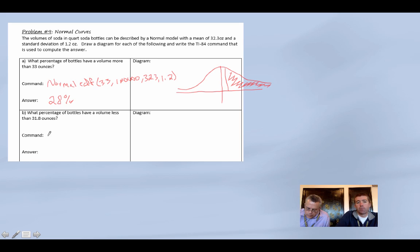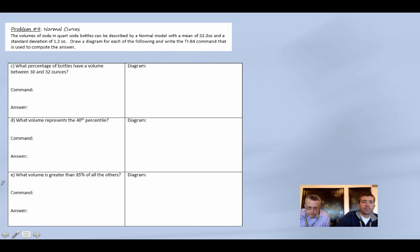Next. So let's do the same thing. Now we want less than 31.8 ounces. Same command, except for this time we're going from negative 100,000. How about just a diagram this time? Here's 32.3, we're at less than 31.8, all this fun stuff down here. And it's 32.3 and 1.2. I got 33.8 for this one.